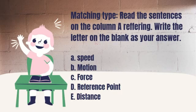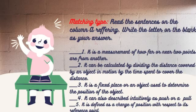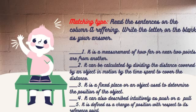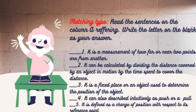Let us answer the questions. Number 1: It is a measurement of how far or near two points are from one another. Number 2: It can be calculated by dividing the distance covered by an object in motion by the time spent to cover the distance. Number 3: It is a fixed space or an object used to determine the position of the object. Number 4: It can also be described intuitively as a push or a pull. Number 5: It is defined as the change of position with respect to its reference point.